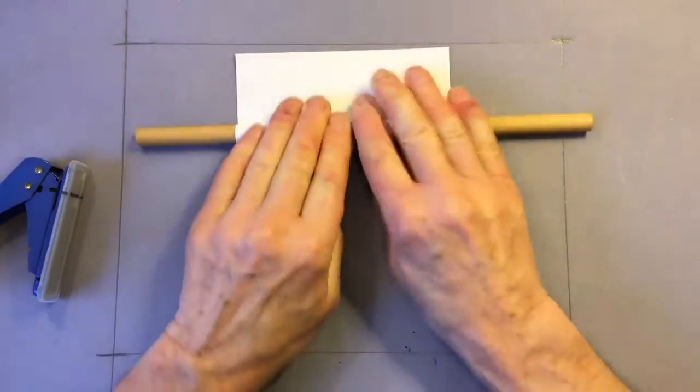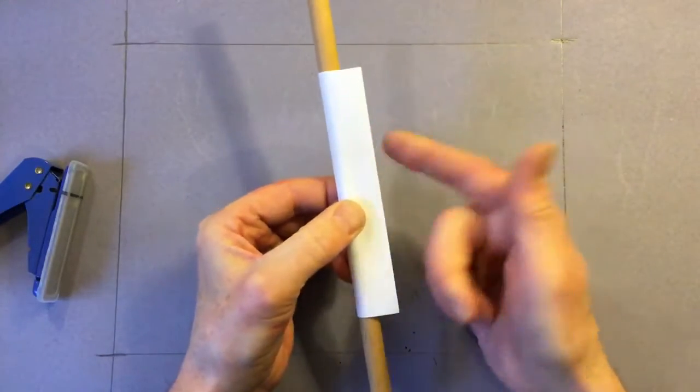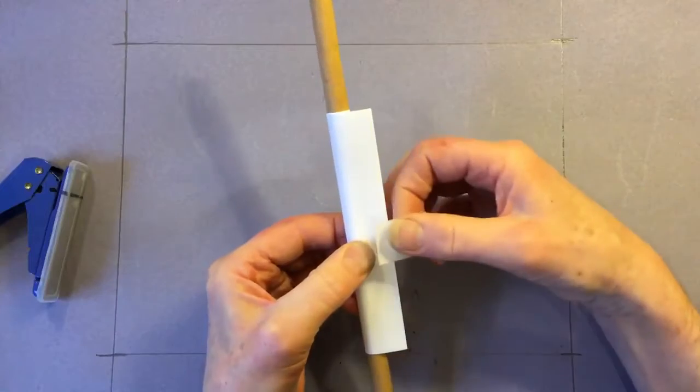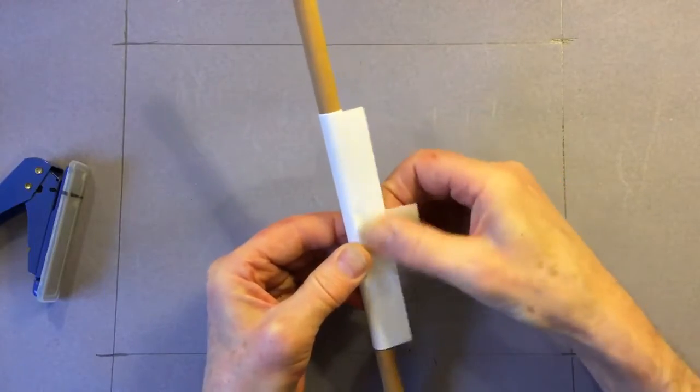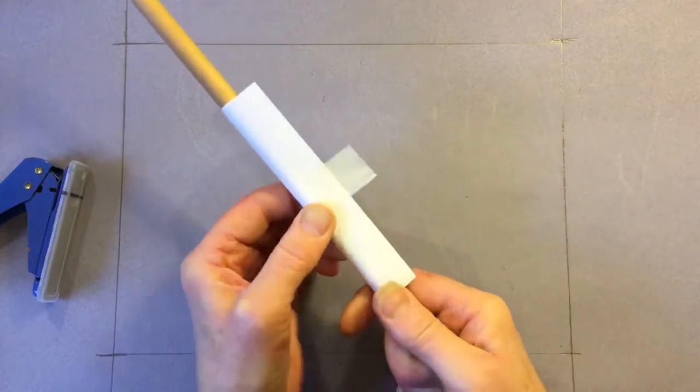Roll the paper tube all the way to the end. Don't let go. Hold on to it and pick it up with a little overlap. Take one little piece of sticky tape and rub it on.